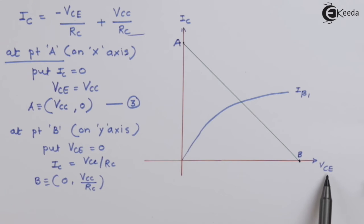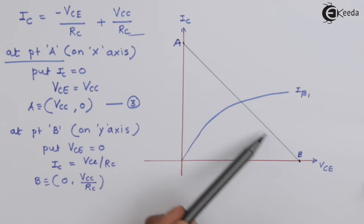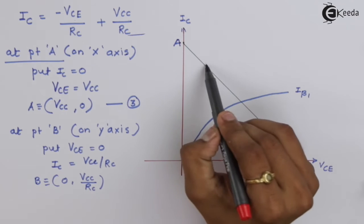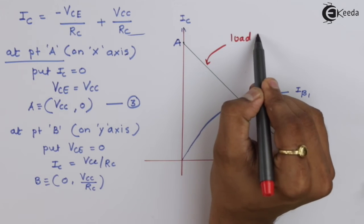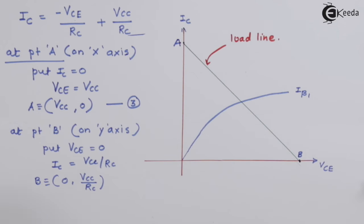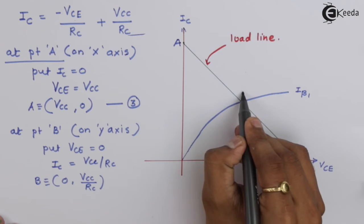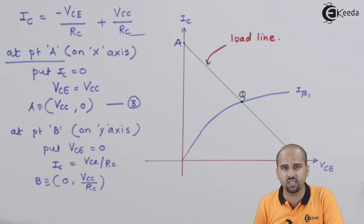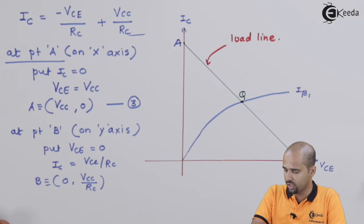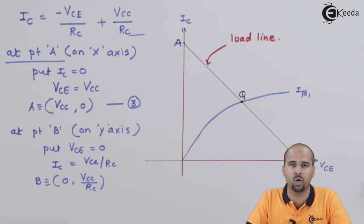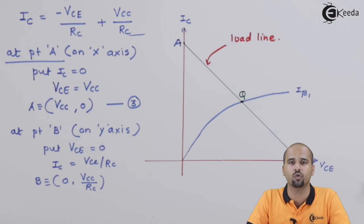For a particular load we get load characteristics, and that line is also called the load line. One point satisfies both the load line and the output characteristics, and that particular point is called the Q point — also called the quiescent point or operating point. The placement of the operating point is very important when designing an amplifier. The operating point should be in the active region for proper amplification without any clipping in current or voltage.